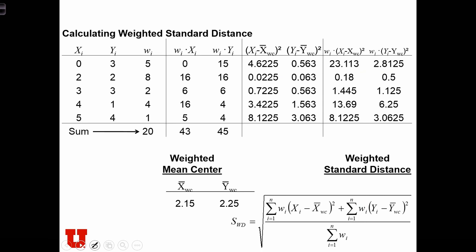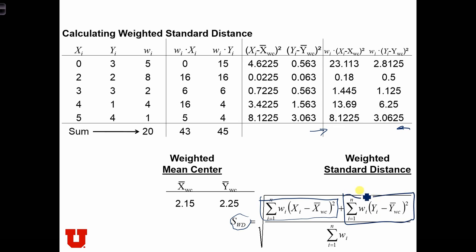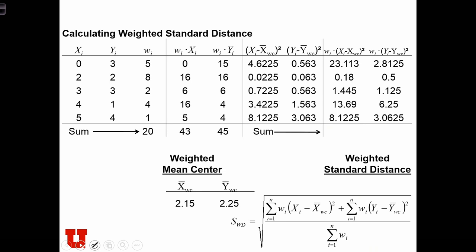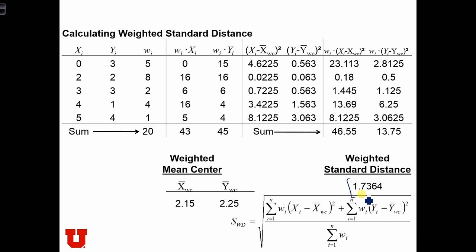Here are the rest of the answers. To calculate the weighted standard distance, we need to take the sum of each of these columns. The sum of one column gives us one summation, and the sum of the other column gives us another summation, and we divide by the sum of the weights, which is 20. The sums of those two columns are 46.5 and 13.75. When we plug everything into the equation, we get a weighted standard distance of 1.7364.